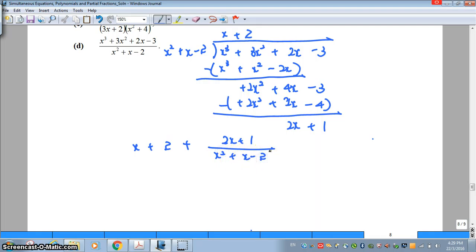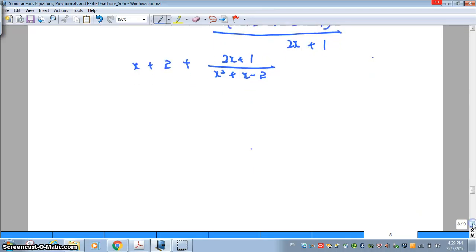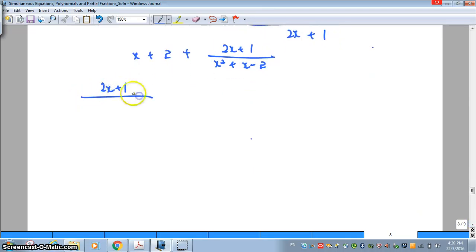So now we only need to do partial fraction for the fraction which you have obtained using the remainder. So same as per normal. Please factorize the denominator.